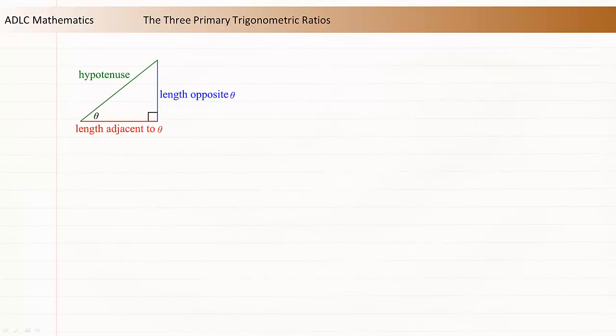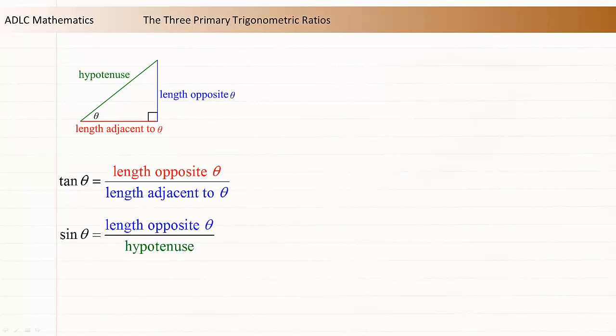The three ratios use relationships between the sides and an acute angle. The tangent of an angle is equal to the length of the side opposite that angle divided by the length of the side adjacent to that angle. The sine of an angle is equal to the length of the side opposite that angle divided by the length of the hypotenuse. The cosine of an angle is equal to the length of the side adjacent to that angle divided by the length of the hypotenuse.